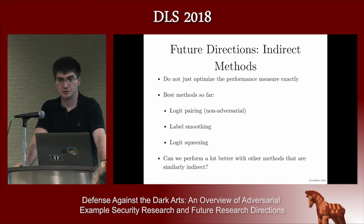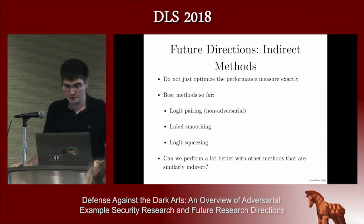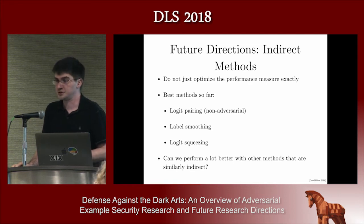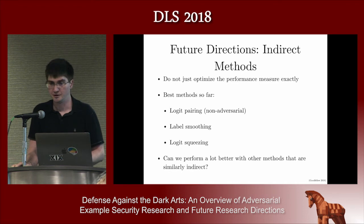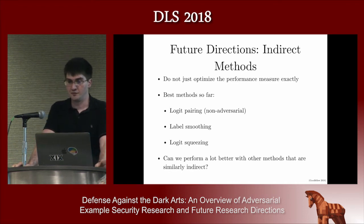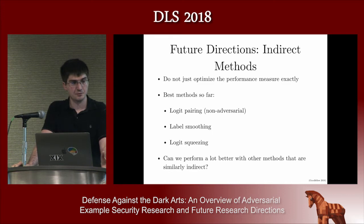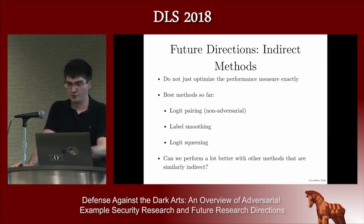For future directions in adversarial example research, one thing I think is really important is to work on what I call indirect methods. If we think of adversarial training as a direct method where we write down the performance under a particular threat model and just optimize it directly, that's setting us up to fail to generalize out of one particular threat model. Instead, I think we should think about what are the flaws in machine learning algorithms that lead to them performing badly in this threat model and try to address those flaws.